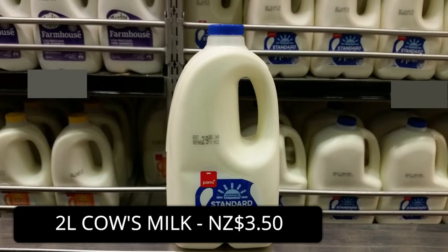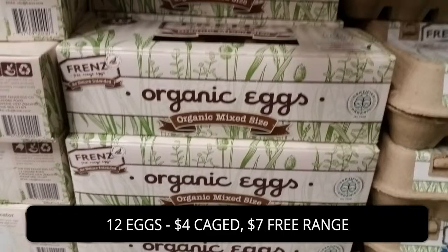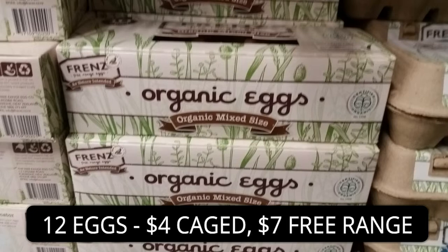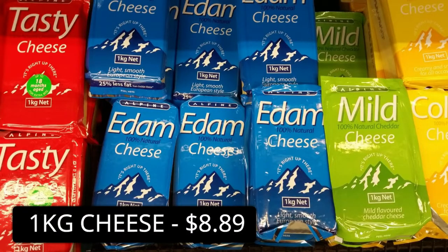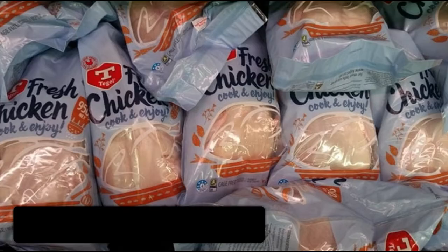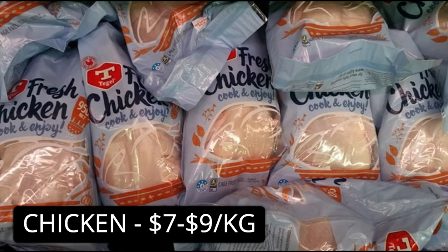In terms of animal products, two litres of milk is around $3.50. A 12-pack of eggs are about $4.00 caged and $7.00 free range. One kilogram of cheese is about $8.89. And chicken is around $7.00 to $9.00 per kilogram, depending on the part of the body.